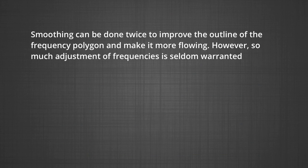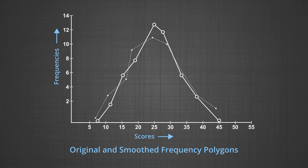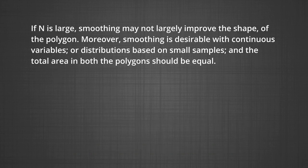Smoothing can be done twice to improve the outline of the frequency polygon and make it more flowing. However, so much adjustment of frequencies is seldom warranted. The original polygon must be presented alongside the smooth one so that the extent of adjustment can be gauged by the reader. If n is large, smoothing may not greatly improve the shape of the polygon, but smoothing is desirable with continuous variables or distributions based on small samples. The total area in both polygons should be equal.